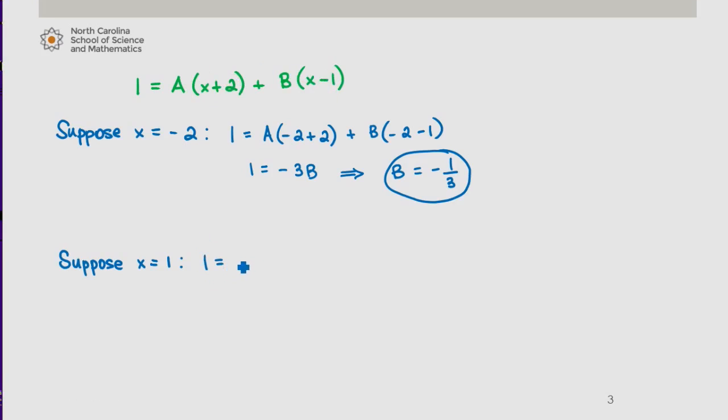When x is 1, I have the equation 1 equals a times 1 plus 2 plus b times 1 minus 1. This tells me that 1 is equal to 3a, which then tells me that a is equal to 1 third.